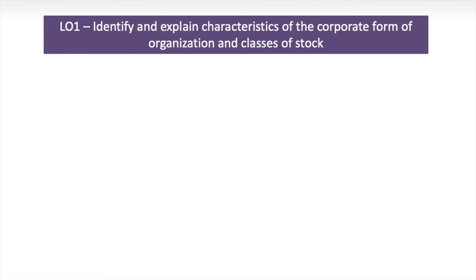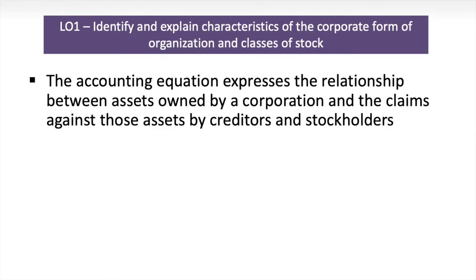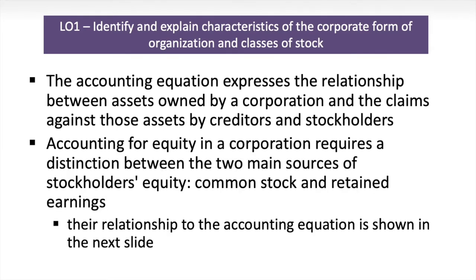Our first learning objective is our essential building block. Before we can get into any analysis, we have to know what we are working with. The accounting equation — assets equals liabilities plus equities — expresses a relationship about the assets owned by a corporation and the claims against those assets by creditors and stockholders. Accounting for equity in a corporation requires a distinction between the two main sources of stockholders' equity: common stock and retained earnings.